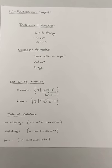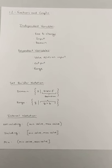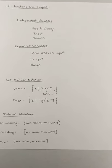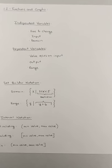So first, to clarify the difference between independent and dependent variables, independent variables are free to change, they are often called the input, and when we list them out, they are our domain values.